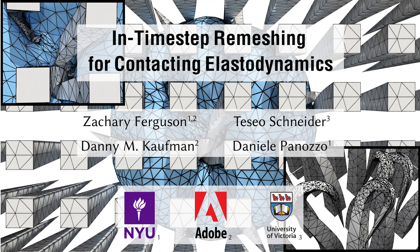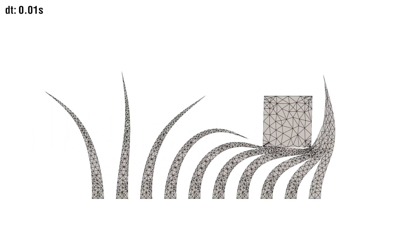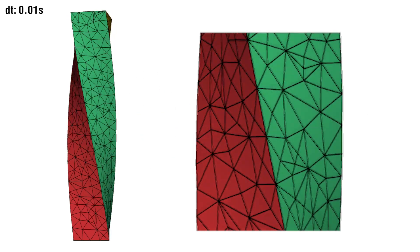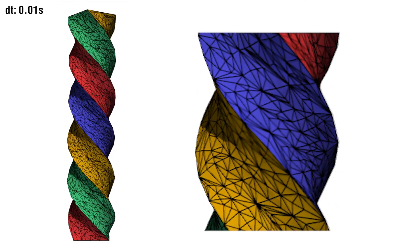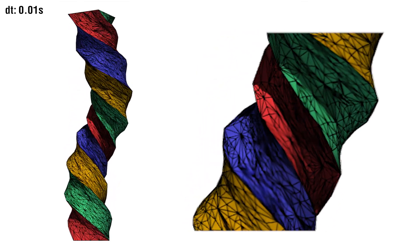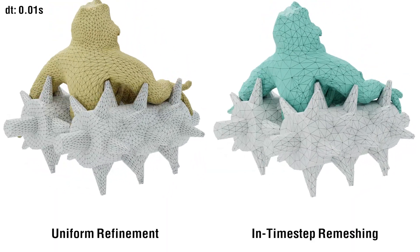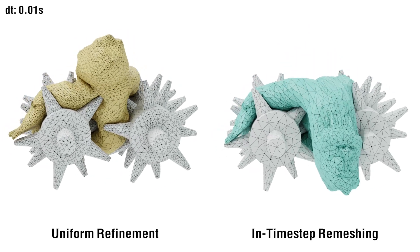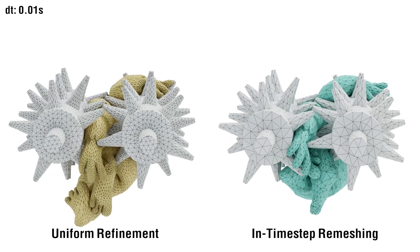We introduced the first method for implicit in-time step remeshing of contacting elastodynamic simulations. Our approach integrates material and contact-aware refinement by performing local operations within a time step to minimize the incremental potential. Refinement and coarsening now directly account for the system's total physical model, including elastic, contact, and frictional forces, as well as an object's mass and velocity. The tight coupling between remeshing and time stepping enables the utilization of the recently developed incremental potential contact method, opening the door to the adaptive simulation of complex deformable scenes with robust and accurate contact resolution.